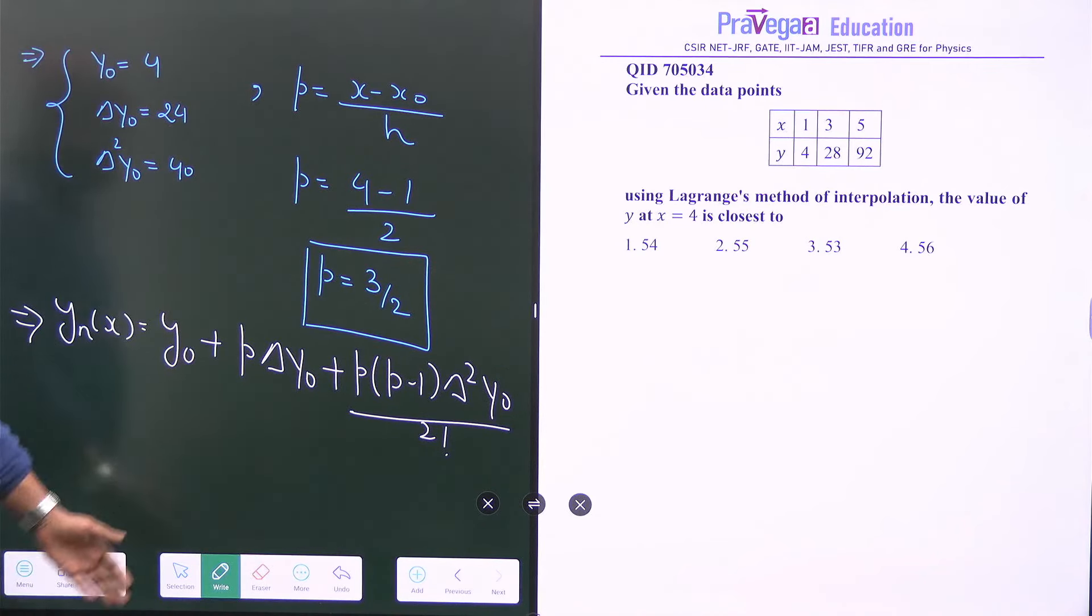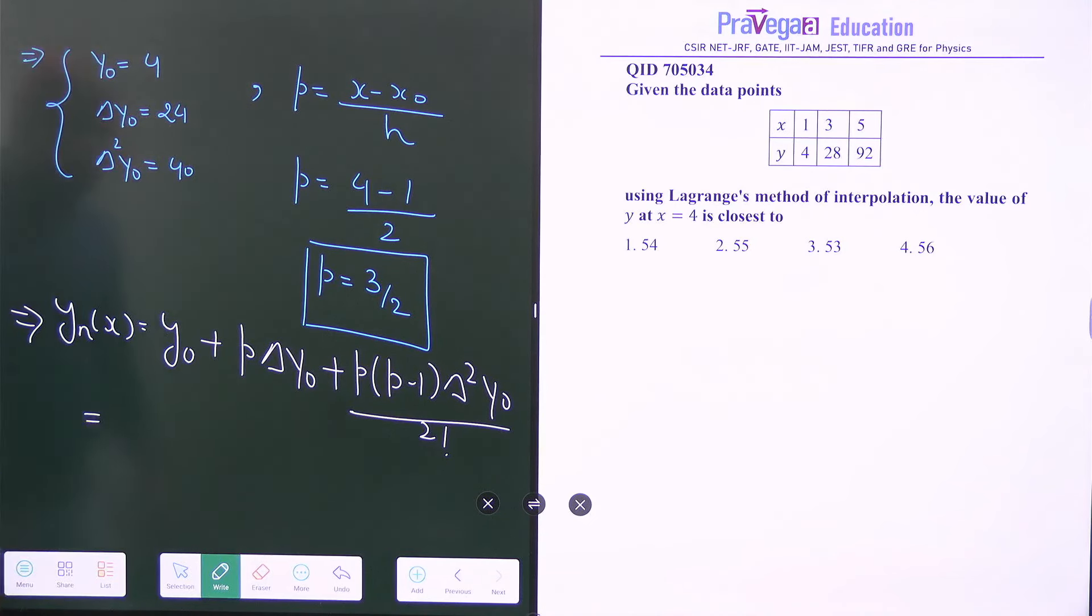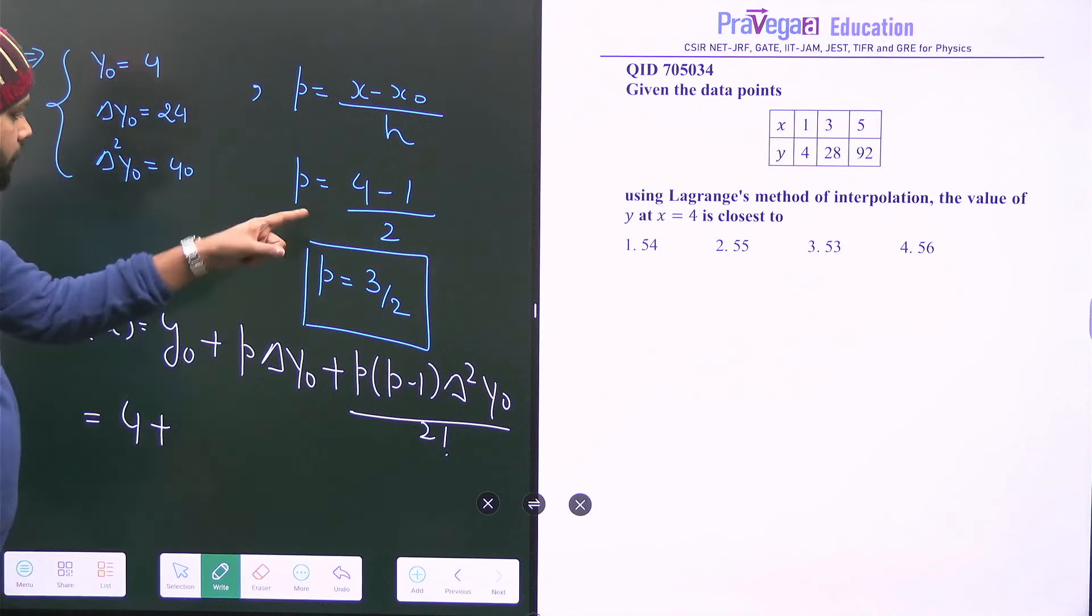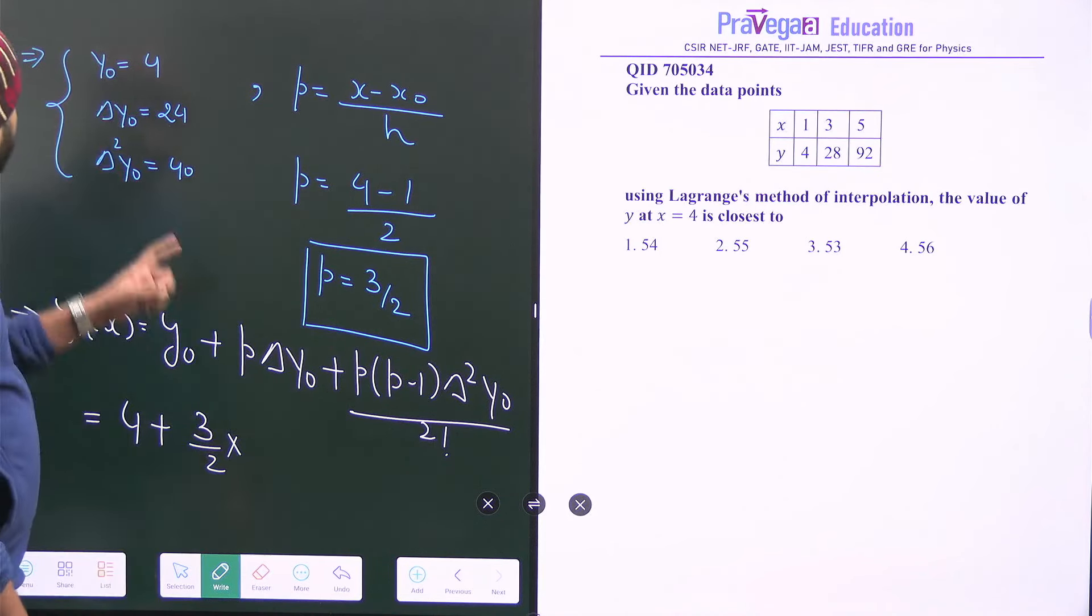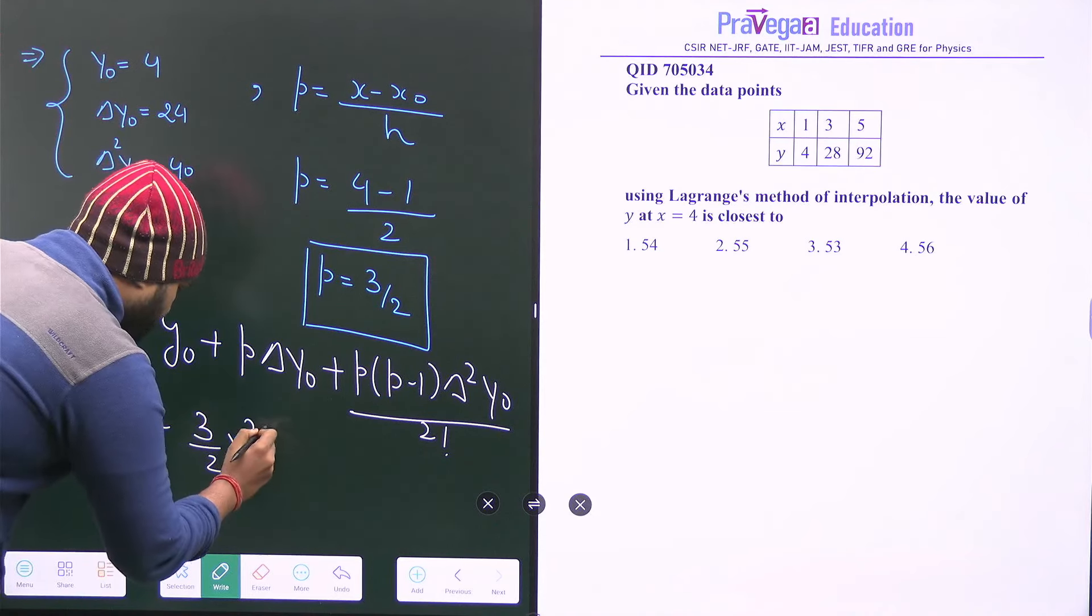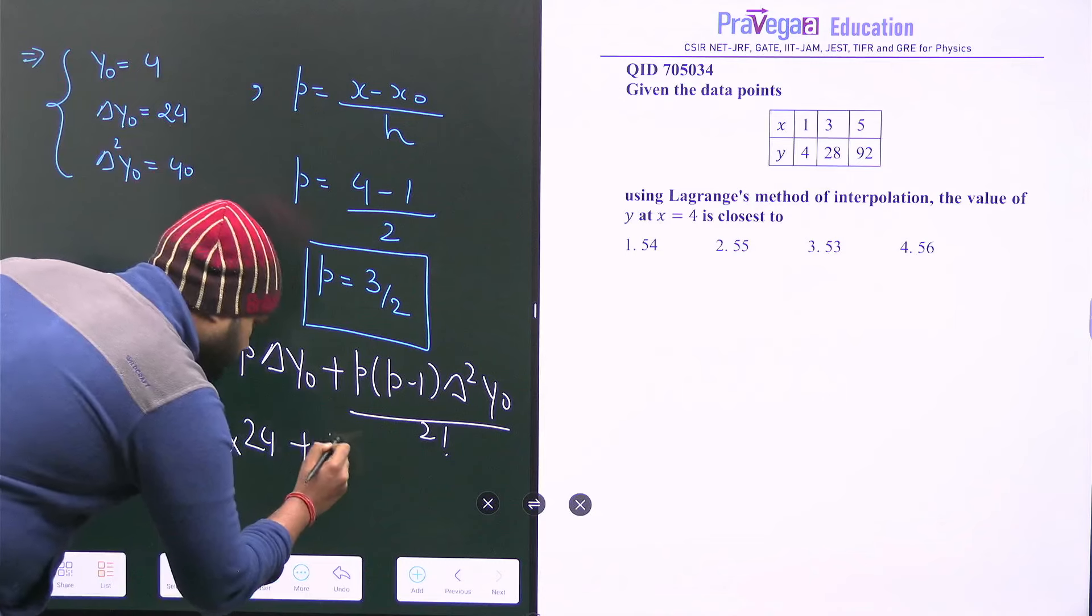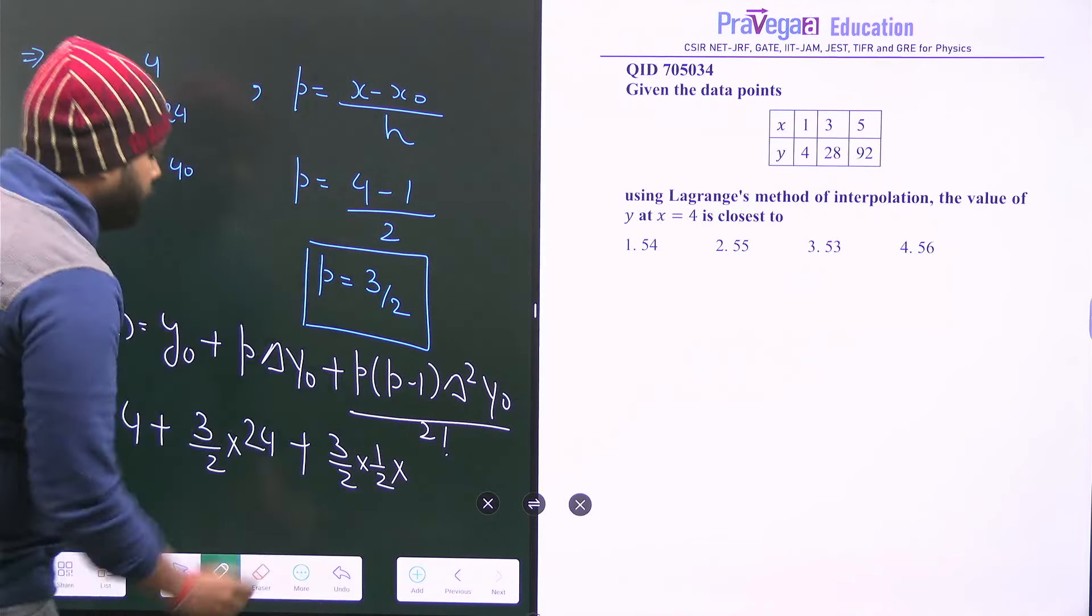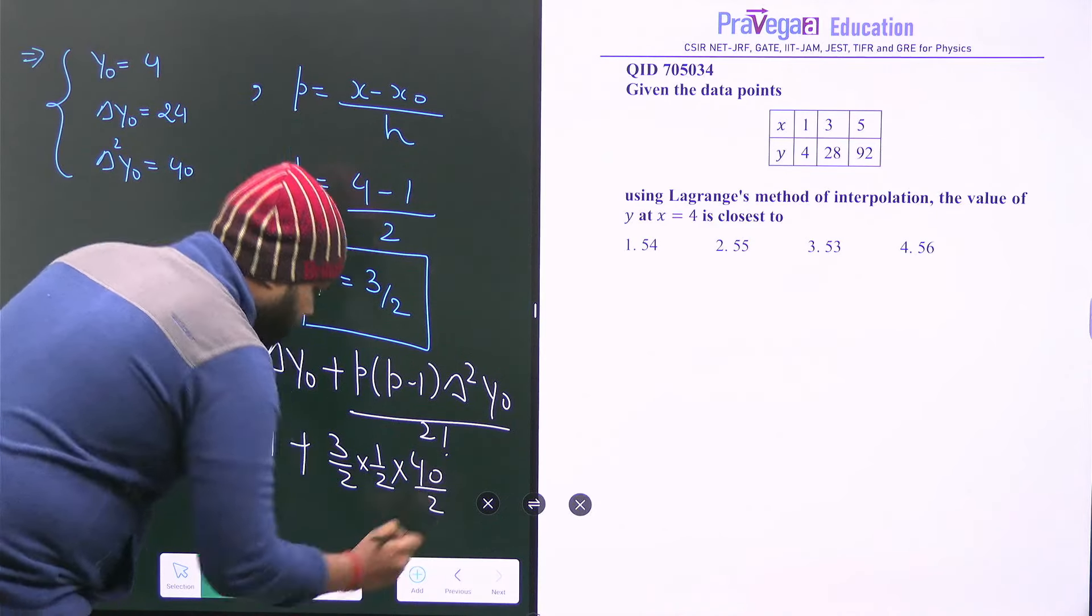We have all the values and we have to just put it in this equation. So what we will get? Value of y0 is 4, plus value of P is 3 by 2 times 24.